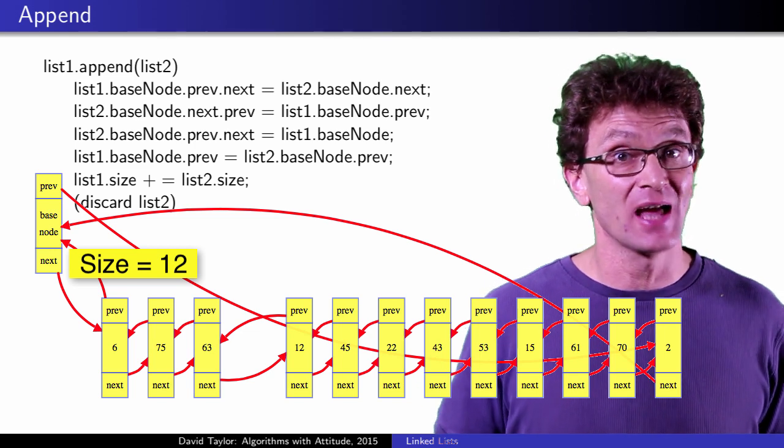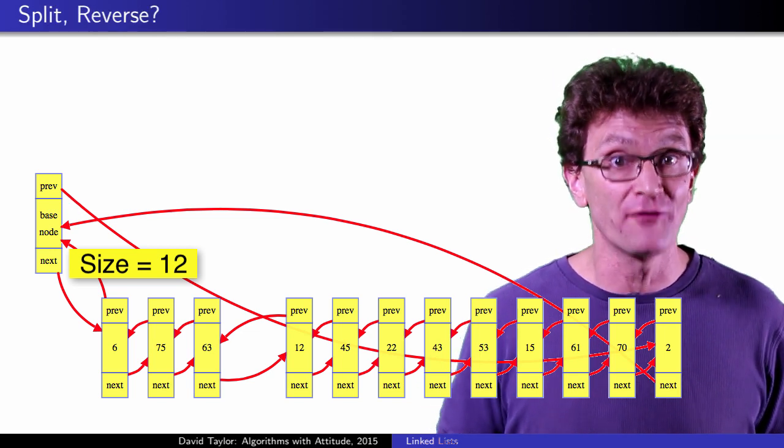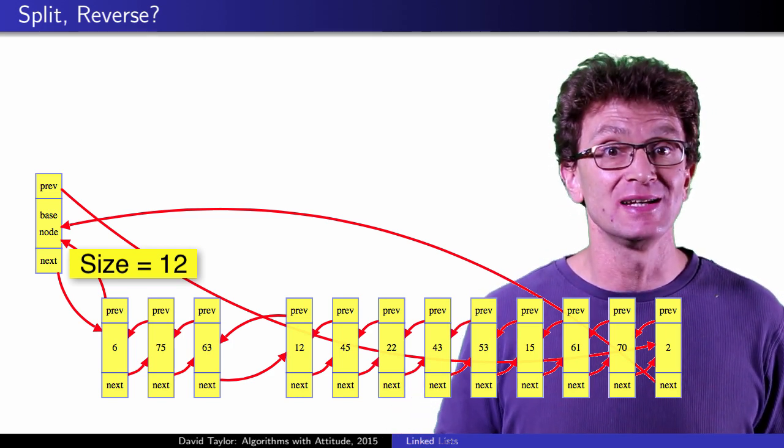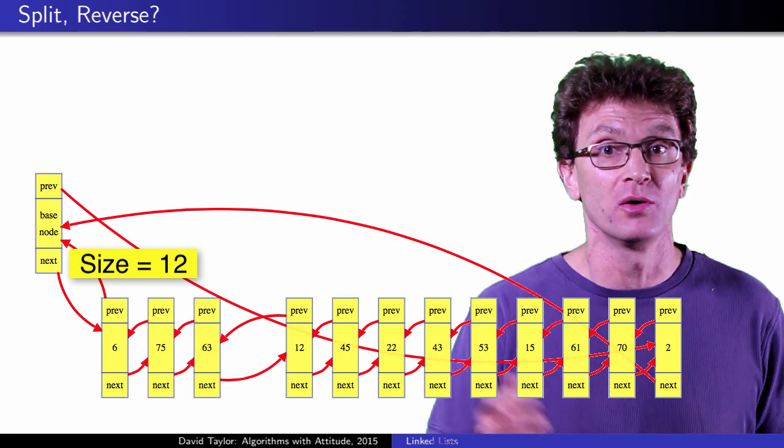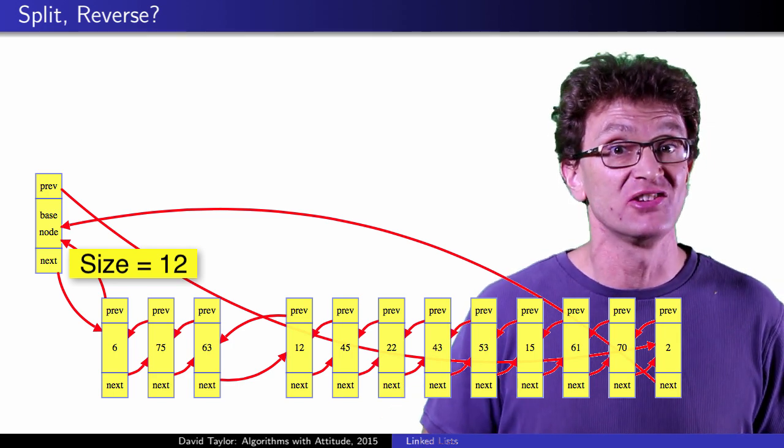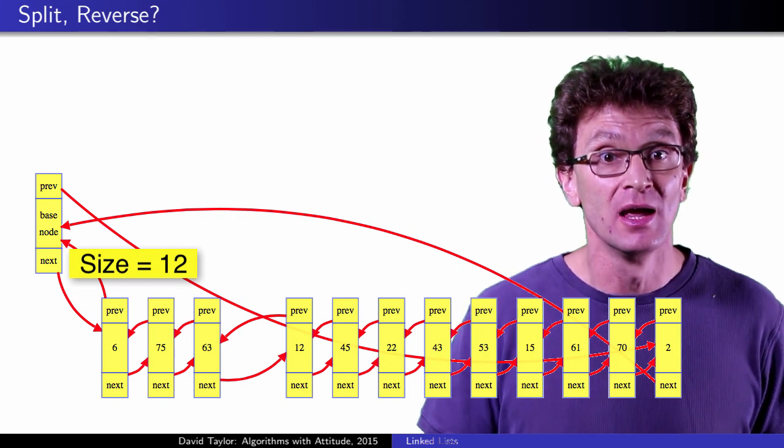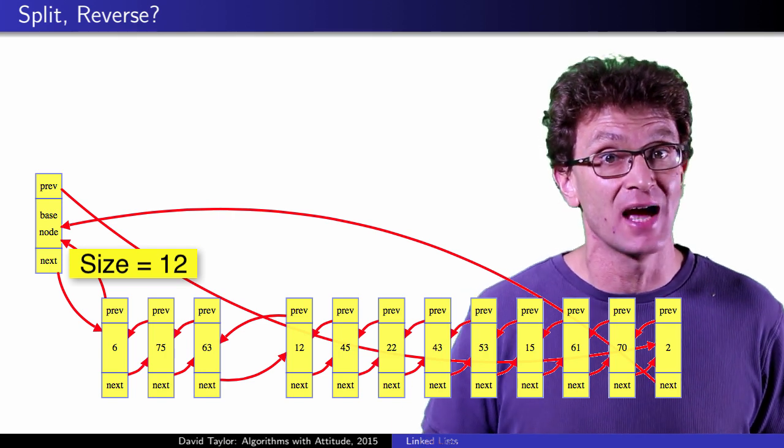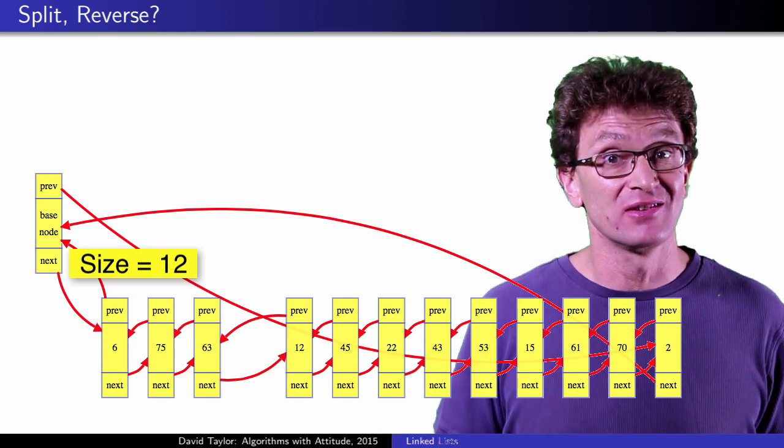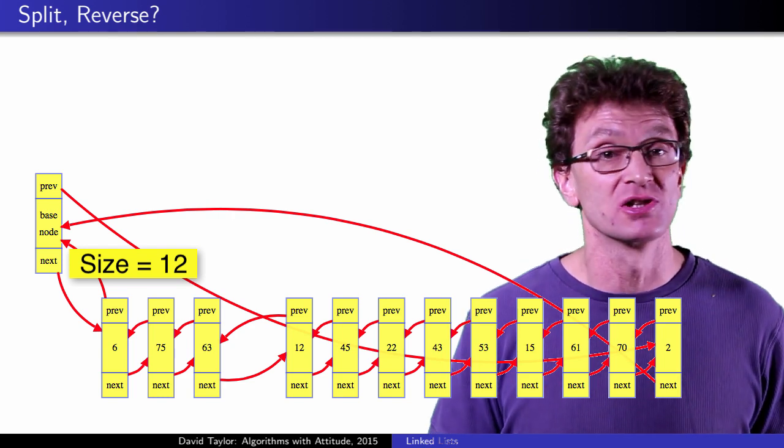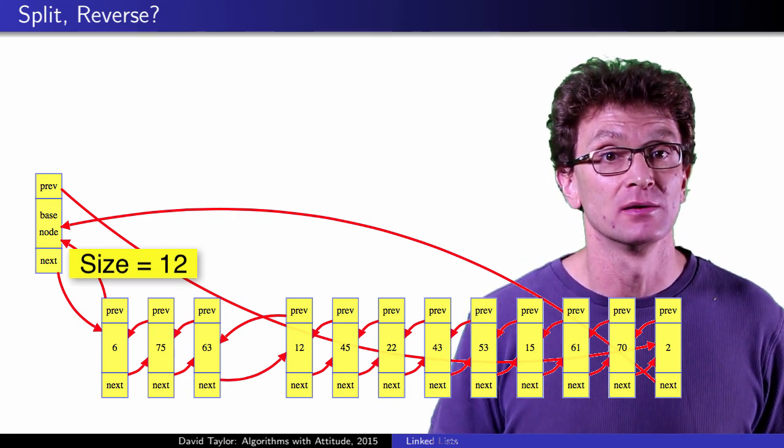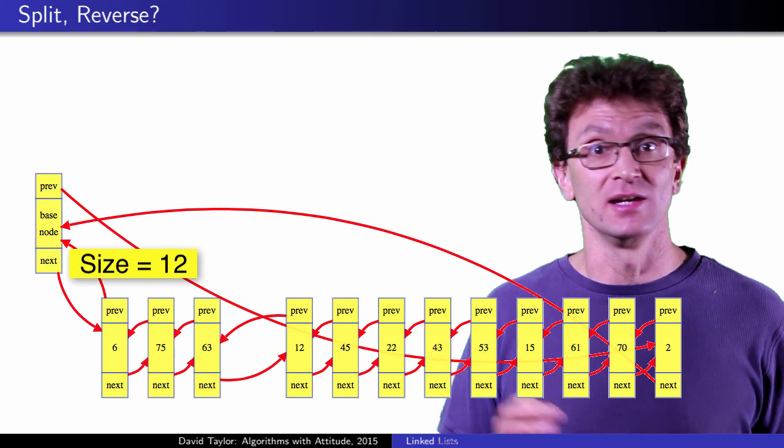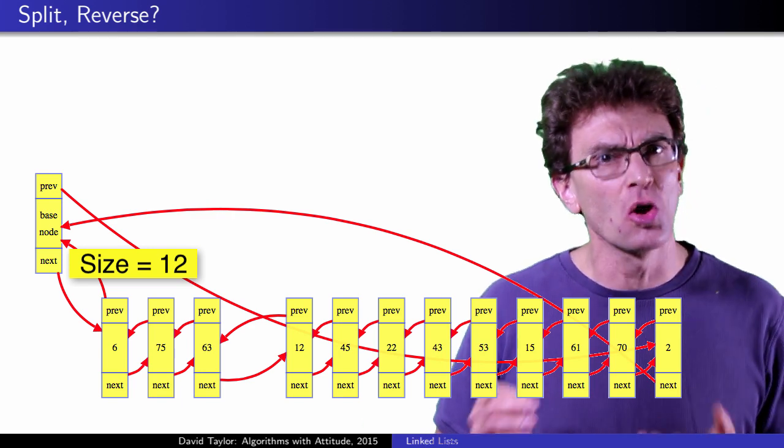You can also have a constant time split operation at a node referenced by an iterator, basically by reversing the append operation, although then the iterator would need to keep track of how many nodes were before its current node, in order to properly set the sizes of the two lists after the split. Keeping track of that as you go would still leave all the individual operations we have seen as constant time each, but iterator indexes will get messed up if you change the list structure after the iterator is created. You could probably add a few more constant time operations, like reversing the list using a flag to indicate which direction to go, but your code will look a bit uglier, and I don't know how commonly that is implemented.